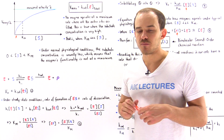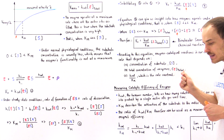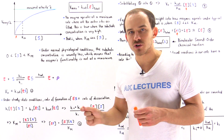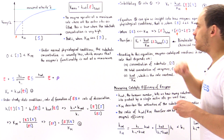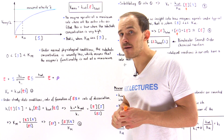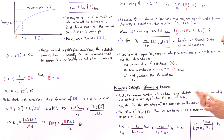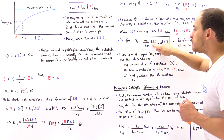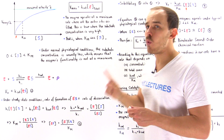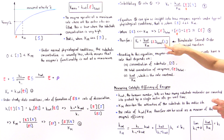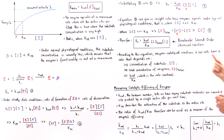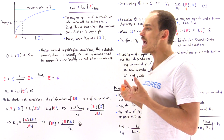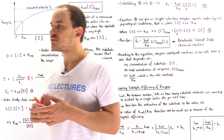This reaction describes a bimolecular second-order chemical reaction. The rate of the reaction V naught equals Kcat divided by Km — that's the reaction rate constant — with two substrates each having an exponent of one, giving a total order of two. This is a typical bimolecular second-order chemical reaction that takes place inside our body under enzyme-catalyzed conditions.